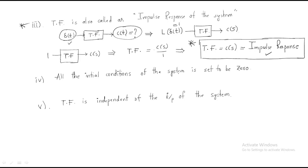Fourth property: all initial conditions of the system are assumed to be zero. This is most important — when analyzing any system to find the transfer function, the initial conditions must be zero. Fifth property: the transfer function is independent of the input of the system. The transfer function doesn't depend on the input — it is a system property. It is not related to the input and output individually.